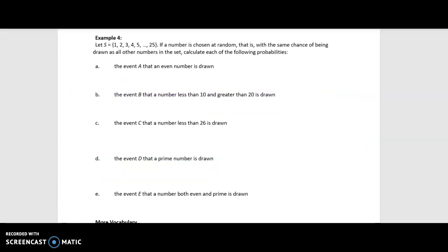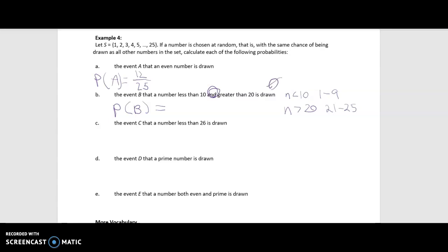For the final example, let S be the integers from 1 to 25. Event A is that an even number is drawn — there are 12 even numbers from 1 to 25, so P(A) = 12/25. Event B is that a number less than 10 and greater than 20 is drawn. Numbers less than 10 are 1–9 and numbers greater than 20 are 21–25; those sets don't intersect, so the event is empty and P(B) = 0.